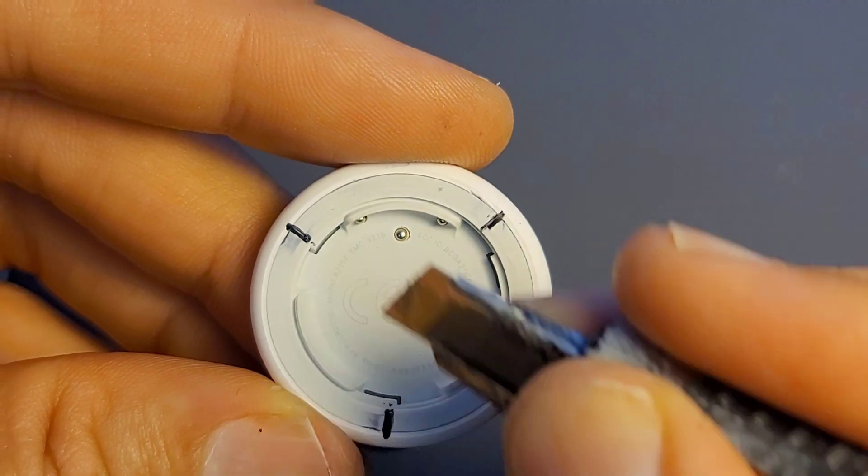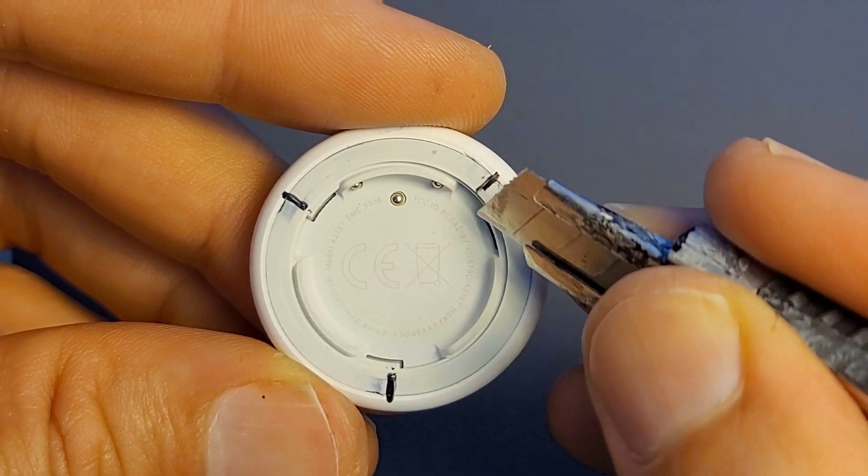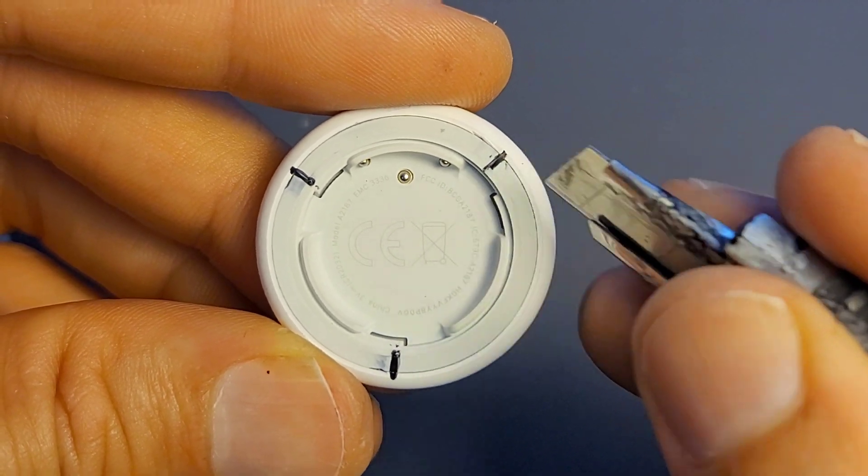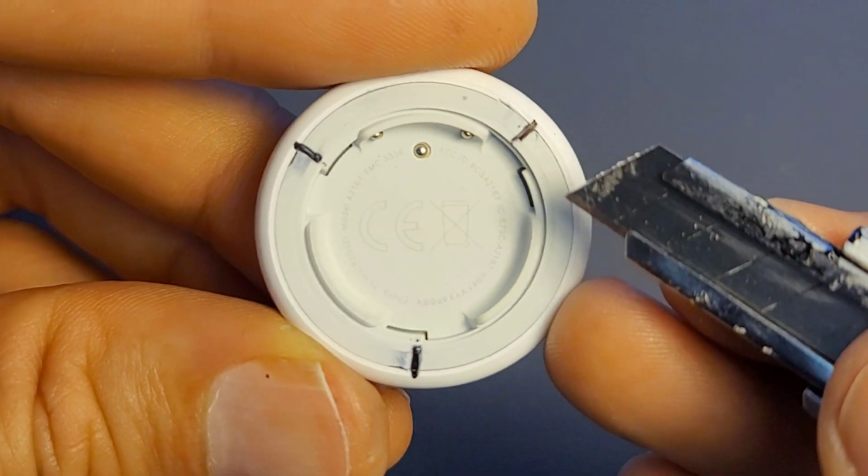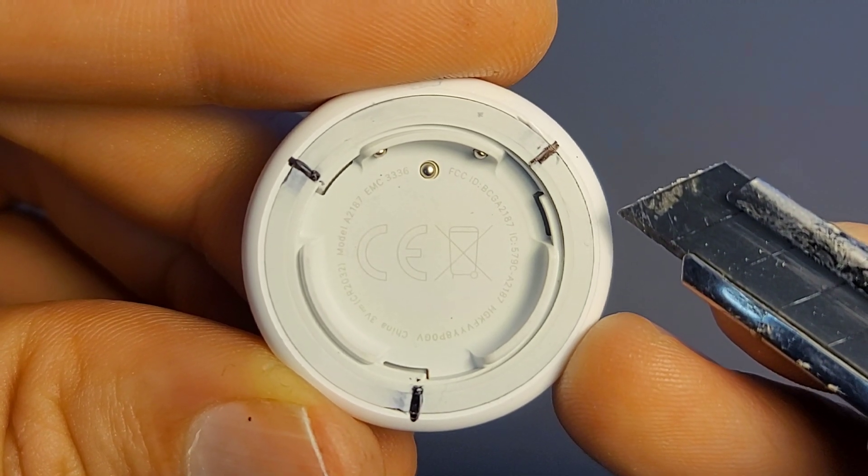These three marks are the locations of the tabs that hold this ring and the battery compartment into the rest of the housing. That's where we're going to pry. So look carefully at where these three marks are and mark them on yours.